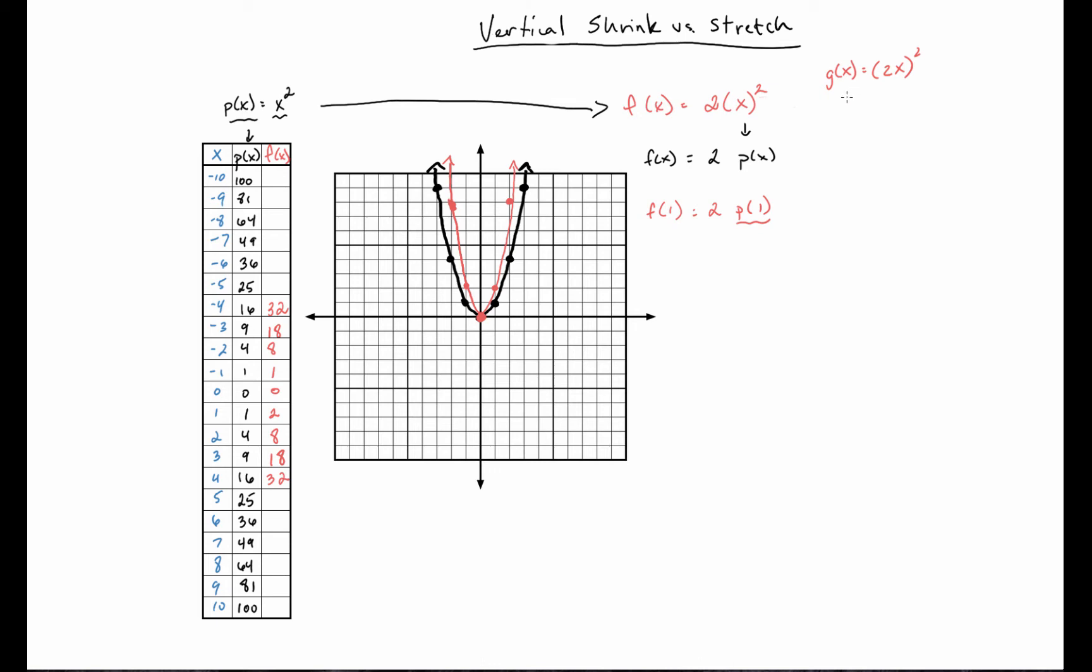But the difference here is that what's really happening in this case is we're kind of going through our inputs faster, right? That's why it's a horizontal change. However, here we're taking whatever the normal output would be and we're doubling it.